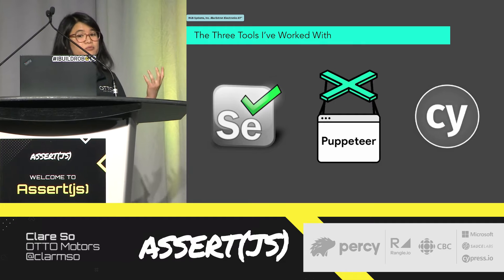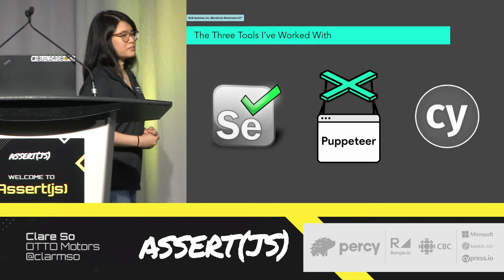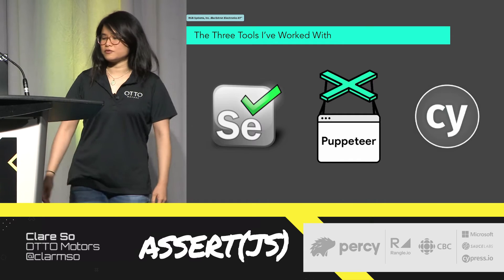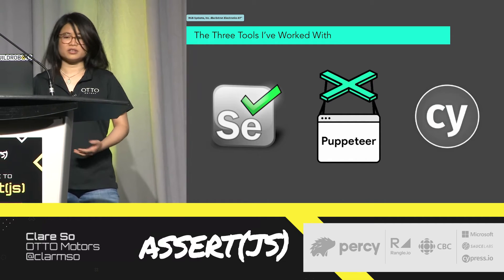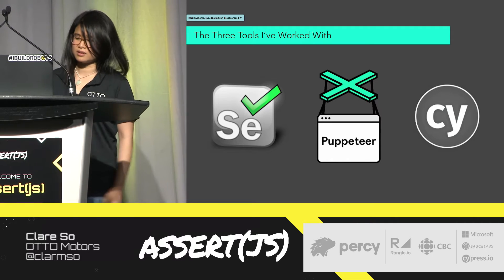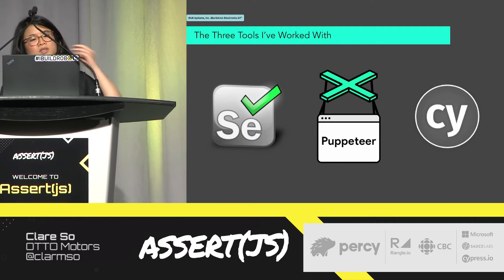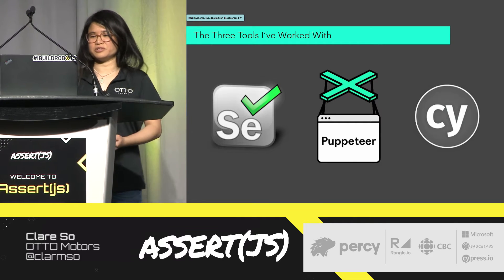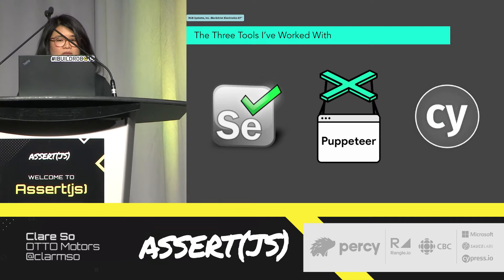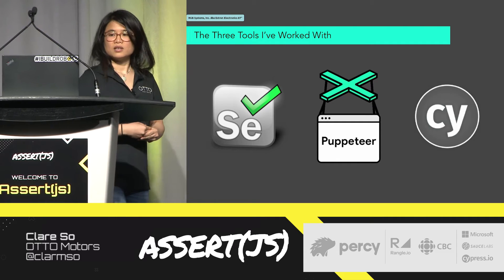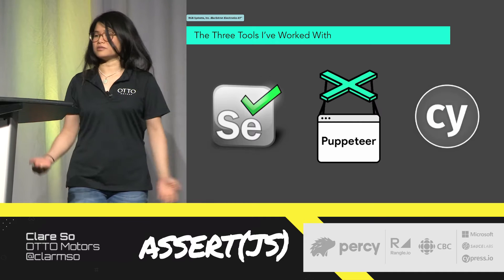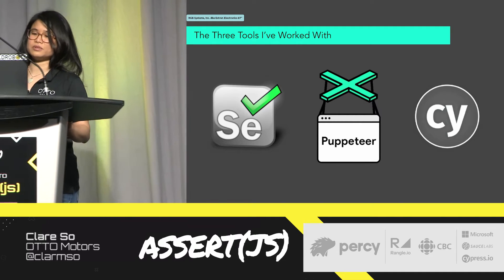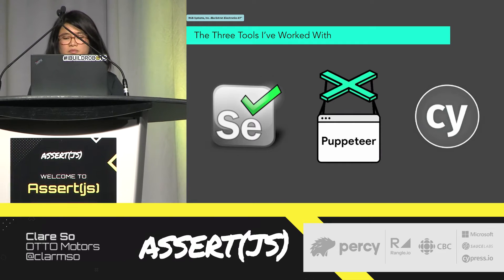So I have worked with Selenium, Puppeteer, and Cypress for UI test automation — and some people call it end-to-end testing. All of them are free to use, which is really good news. But none of them are perfect. Each of them has its own advantages and disadvantages. I will share them with you shortly.